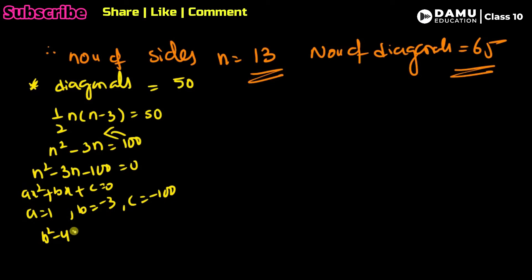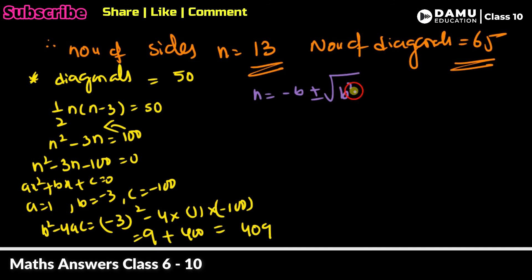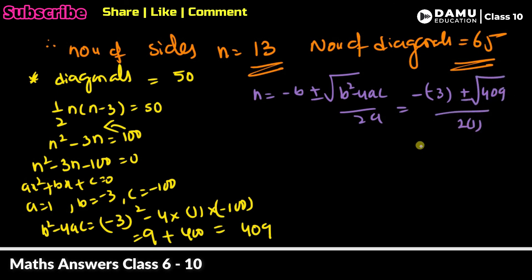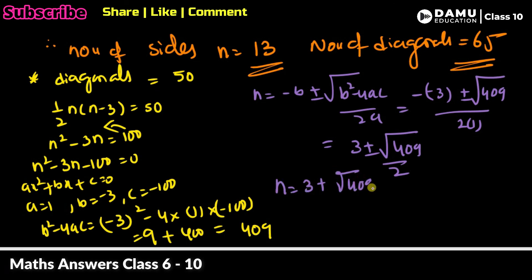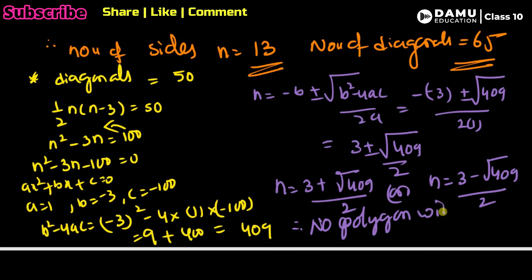We compute b² − 4ac = (−3)² − 4(1)(−100) = 9 + 400 = 409. Applying the quadratic formula, n = (3 ± √409) / 2. Since 409 is not a perfect square, n is not an integer. Therefore, no polygon with 50 diagonals exists.